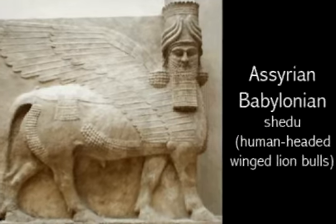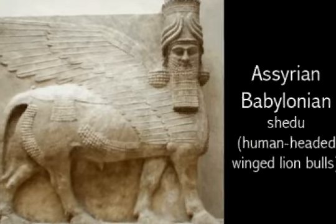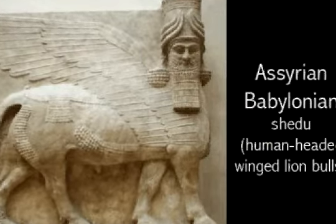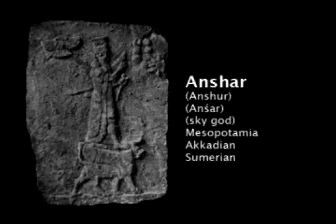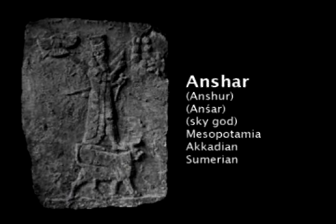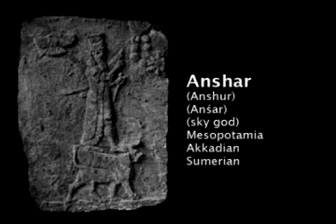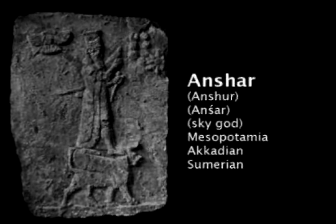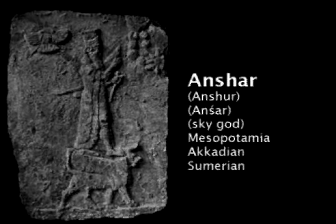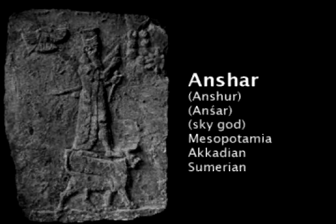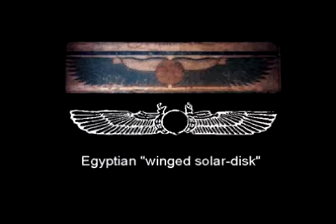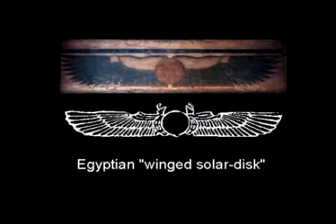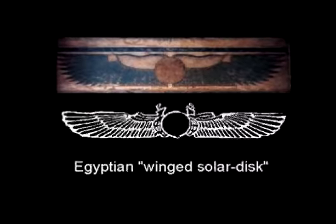And of course, Asur, the god, the bull god, is also found in the Bible as an angel, the Shadu. And Asur is also the ancient Mesopotamian god of Sumer called Anshar, who rides the bull.